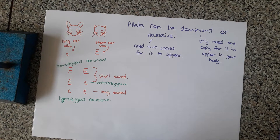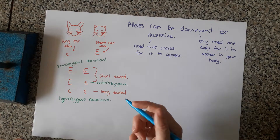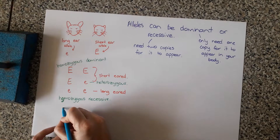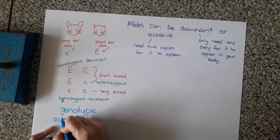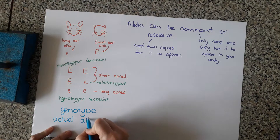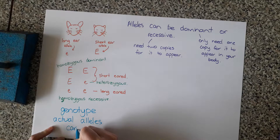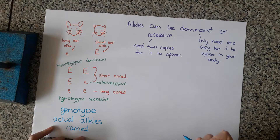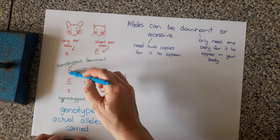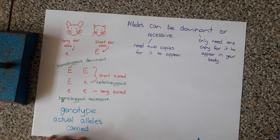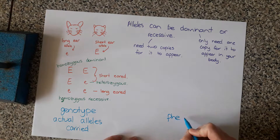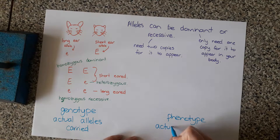The actual alleles that you have in your body — or in this case that the little cat creatures have — is called your genotype: the type of genes you have, the actual alleles carried in your cells. So if we took your chromosomes and took a look at them, we'd see the code for big E or little e. Then we'd look at your body and say you've got a phenotype, which is your actual appearance or trait.